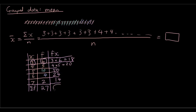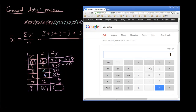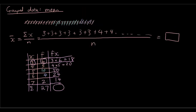We're going to fill in the final cell by adding up all the numbers in the fx column. Using our calculator: 18 plus 20 plus 50 plus 24 plus 14. The answer is 126. So 126 is the total of all the numbers down this column.